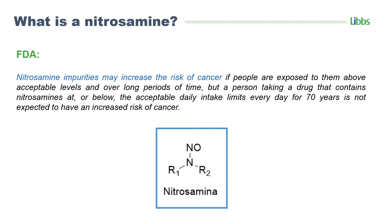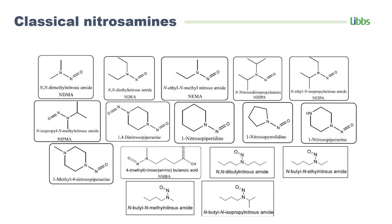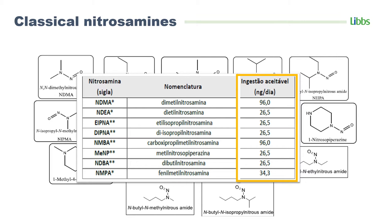First of all, we have to understand what is a nitrosamine. Nitrosamines are impurities that may increase the risk of cancer. This is the basic structure of a nitrosamine — they have some radicals bonded to an amine, and this amine presents an N-nitroso bond. Here we have the most classical nitrosamines, meaning those that come from the most usual chemicals present in the manufacturing process of some APIs or degradation products. Usually these nitrosamines present a very low acceptable intake in the order of nanograms per day, while for other mutagenic impurities we work in the order of micrograms per day.